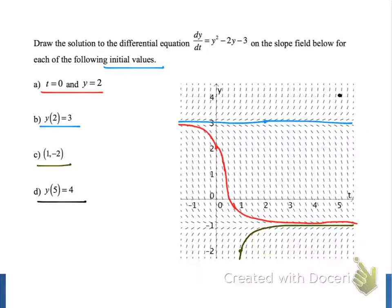In our last example, the initial value is at 5, 4 in the top right corner of our graph. As t increases, our y values also increase, and as t decreases, we see that the solution has a horizontal asymptote at y equals 3.